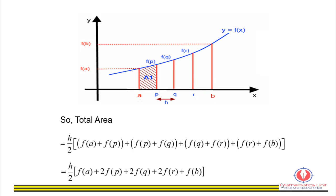So total area is given by h over 2 multiplied by the sum of f(a), f(p), f(q), f(r), and f(b). In other words, it is h over 2 multiplied by the sum of the first and last ordinate and twice the total of ordinates in between.